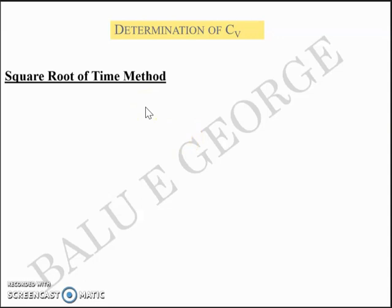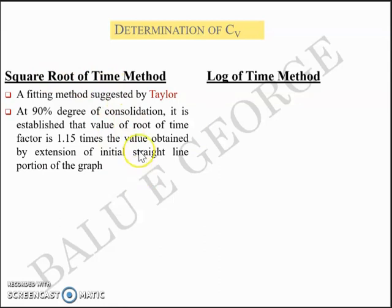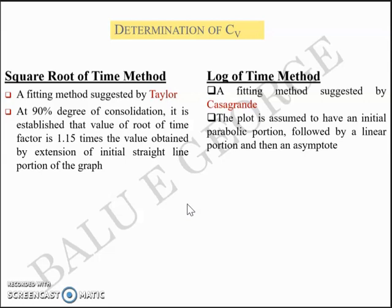The first method is the square root of time method, a graphical fitting method proposed by Taylor. At 90% consolidation it is established that the value of the root of time factor Tv is 1.15 times the value obtained by extension of the initial straight line portion of the graph. The second method is the logarithm of time method proposed by Casagrande, another graphical fitting method. The key idea of the log of time method is that the plot is assumed to have an initial parabolic portion followed by a linear portion and then an asymptote. We'll take up the square root of time method first.